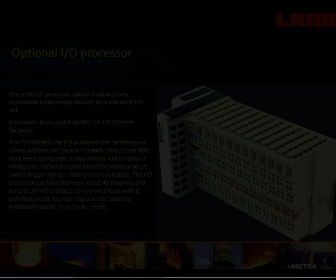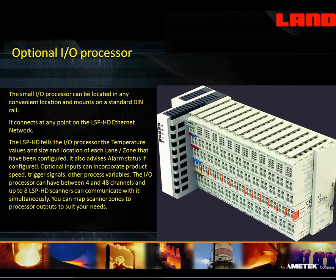The I/O processor that we would connect to give you physical 4 to 20 milliamp outputs is a little DIN rail mounted device. It measures about 2.5 inches high and 2.5 inches deep, and it's modular — you just add little blocks to give you more outputs or more inputs. The device is driven by Ethernet, has standard RJ45 connectors on it, and just hooks anywhere into the connection between the scanner and the readout computer. A number of customers don't have the need for displays and just use scanners to output outputs, running them blind otherwise. The intelligence for all of this is contained within the scanner itself.